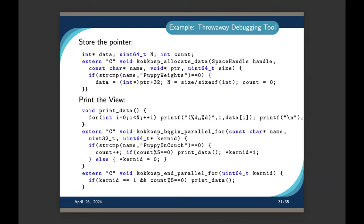It depends a little bit on your use case. If you want to be fancy, you can create CUDA events. In general with Kokkos, we have a capability we're working on to basically see if an execution space is busy right now, so you can just query it. There is no way to attach a callback at this point in time. What you do is whenever you need to, you just fence the kernel and then manually launch whatever you need to do.